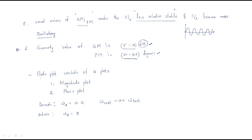The Bode plot consists of two plots. A plot gives the relation between two variables, and the Bode plot has two: the first is the magnitude plot, which shows magnitude variation, and the second is the phase plot, which represents phase variation of the system.